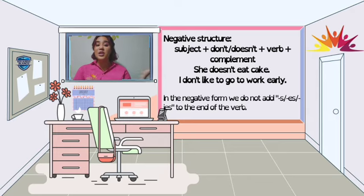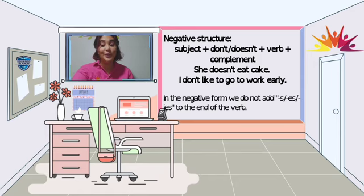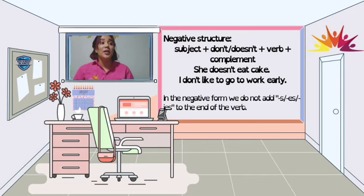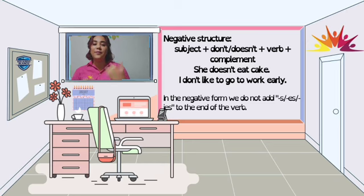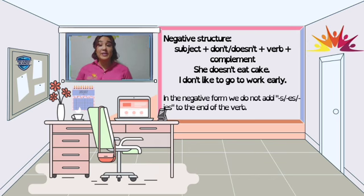For example: She doesn't eat cake. I don't like to go to work early. She doesn't like to sleep late. Ella no come torta, a mí no me gusta ir a trabajar temprano, a ella no le gusta dormirse tarde. Let's remember that in the negative form we do not add -s, -es, or -ies to the end of the verb. Recordemos que en la forma negativa no les agregamos el sufijo -s, -es, o -ies al final de nuestro verbo.